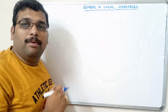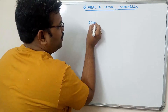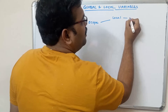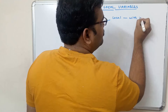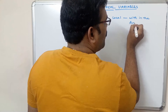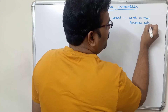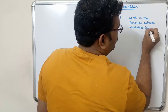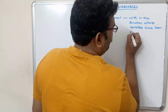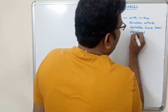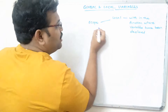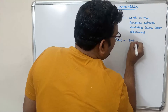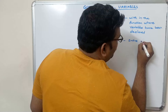The main difference between local and global variables is scope. The scope of local variables will be only within the function where the variables have been declared. Global scope will be throughout the entire program.